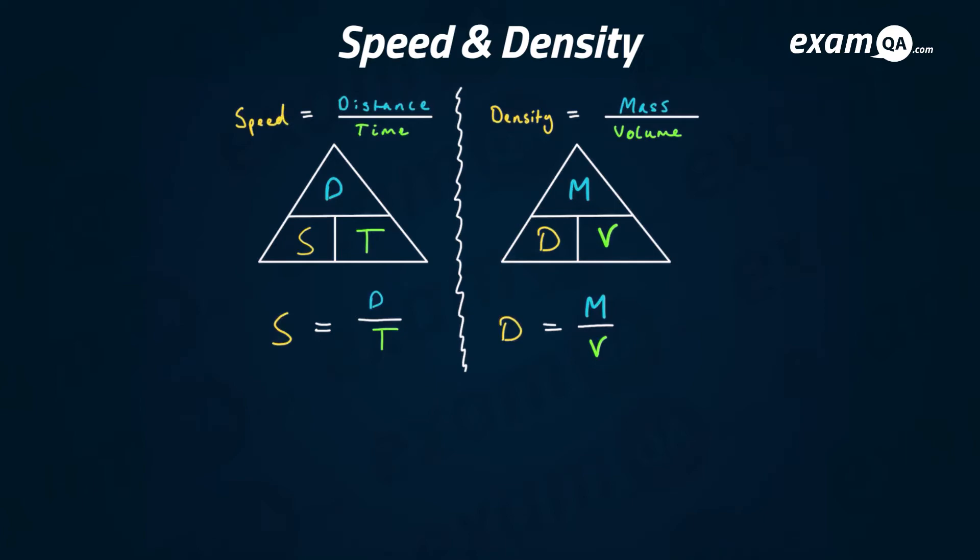These are two different concepts but they share the same equation so the questions are very similar. The formula for speed is speed equals distance over time. The formula for density is density equals mass over volume.